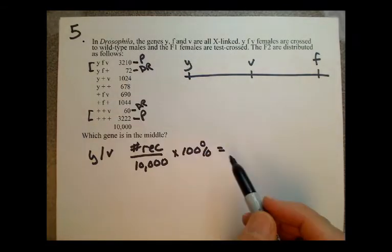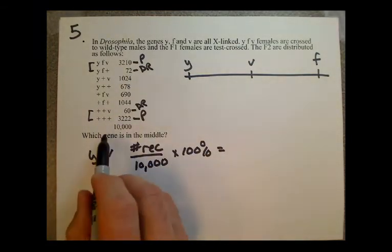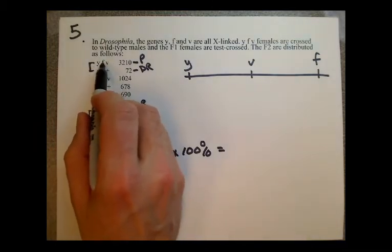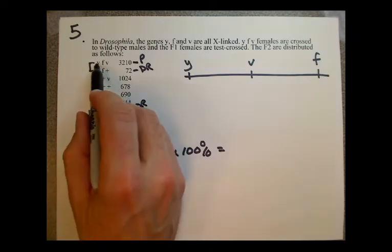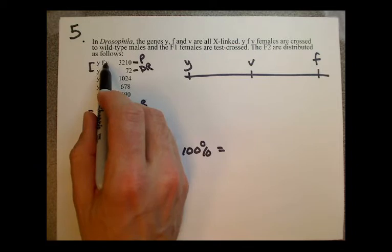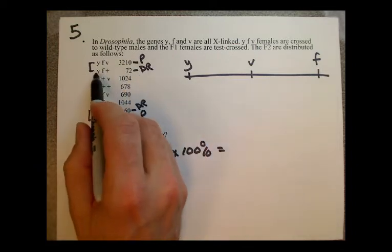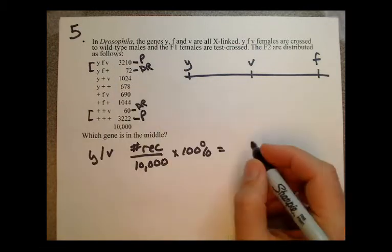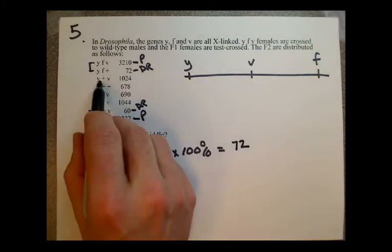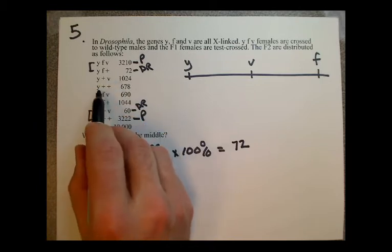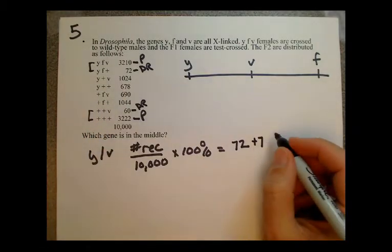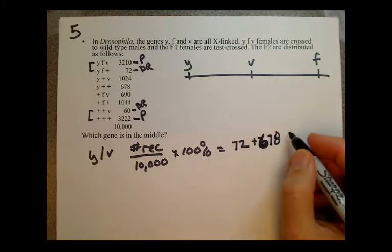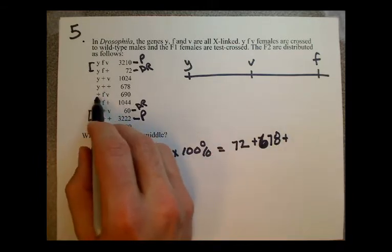The number of recombinants we have to look for: in the parental combinations, Y and V are either both mutant or both wild type. So we want to look through the other classes and find ones where Y and V don't match in their wild or mutant status. The double recombinant here — Y and V no longer match, so we add those: 72. Y and V are still both mutant here, so that's not a recombinant. Y is mutant and V is wild type here, so these are recombinants: plus 678. And here again Y and V no longer match, so plus 690.